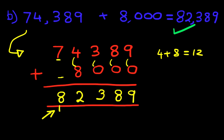That is correct. So that is how we do addition of five-digit numbers and thousands using the vertical format.